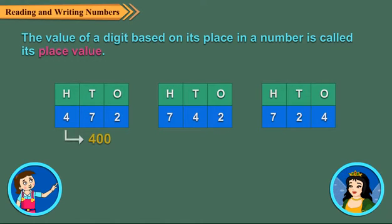For example, the place value of 4 in 724, 742 and 472 is 4, 40 and 400 respectively. In 724, 4 is at 1's place. So, its place value is 4 ones or 4.